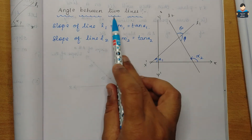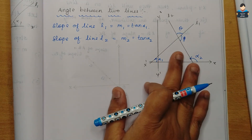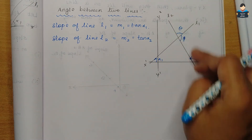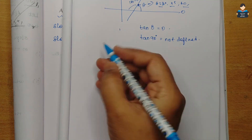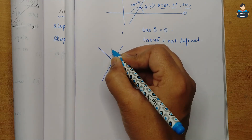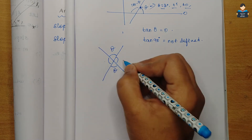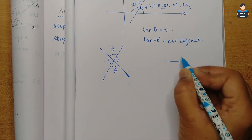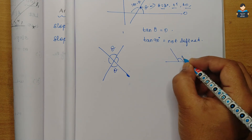Next topic: angle between two lines. We derive the equation for the angle between two intersecting lines L1 and L2. At the intersection point, we can observe vertically opposite angles and a linear pair, giving angles theta and 180 minus theta.